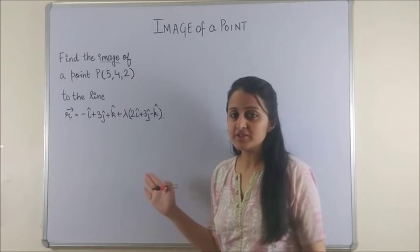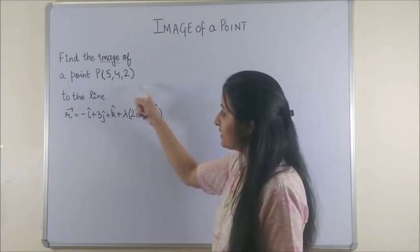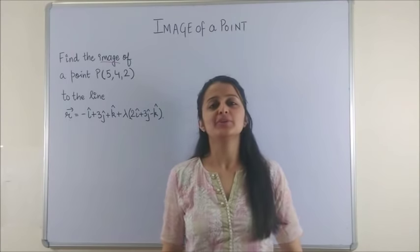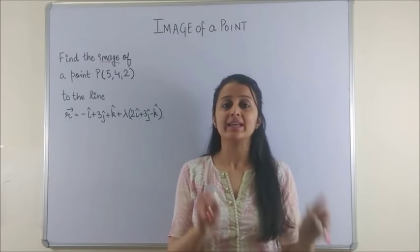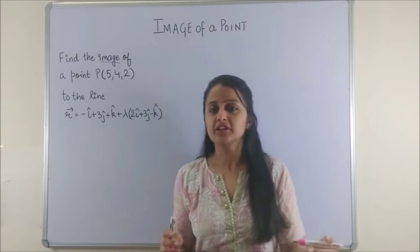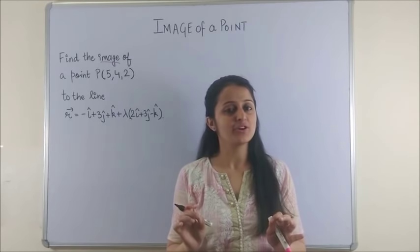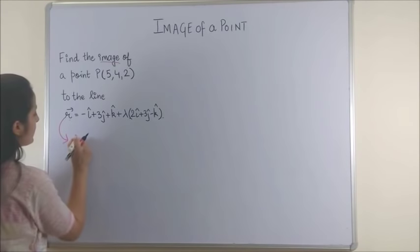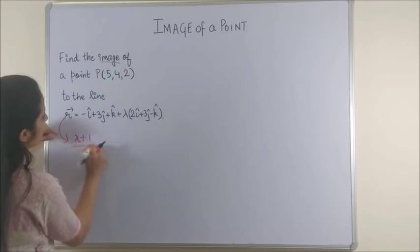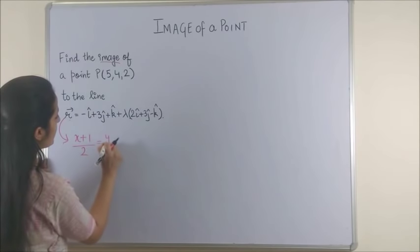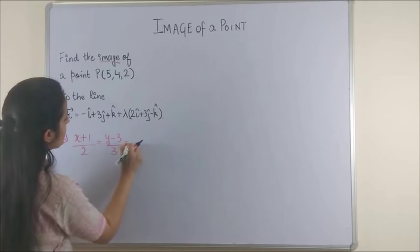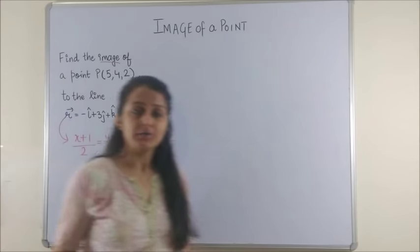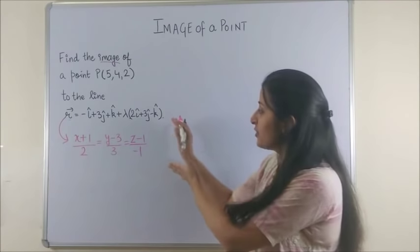Looking at the very first question it says find the image of a point (5, 4, 2) to the given line. The first thing that we usually do is if you see any line or plane in the vector form, convert it into Cartesian. Trust me that makes your question very simple. So here your line would become (x + 1)/2 = (y - 3)/3 = (z - 1)/(-1). Now how did I convert the vector form to the Cartesian?